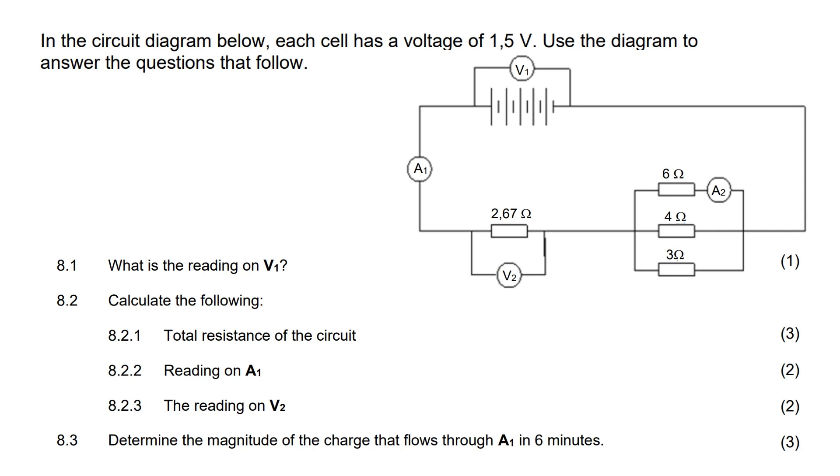In the circuit diagram below, each cell has a voltage of 1.5V. Now remember, a cell is a long line and a small line. So how many of those are there? There's one, a second one, a third one, a fourth one, and a fifth one.